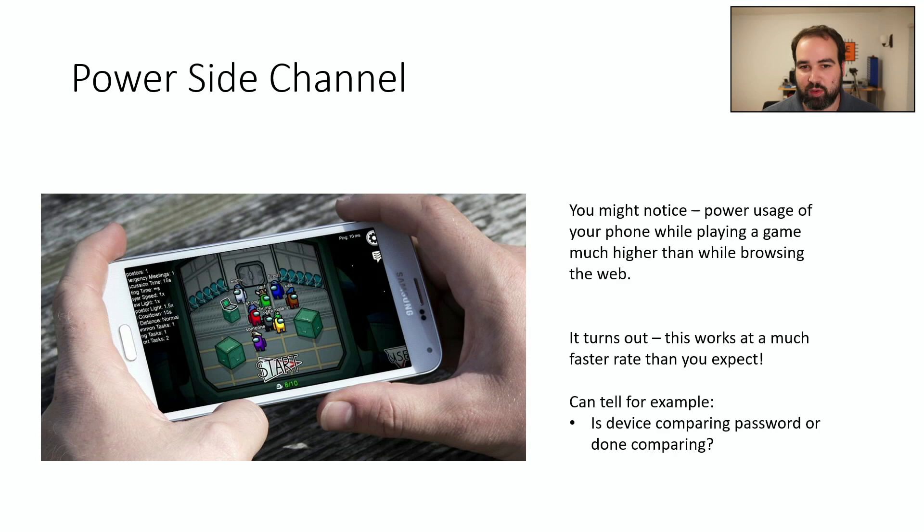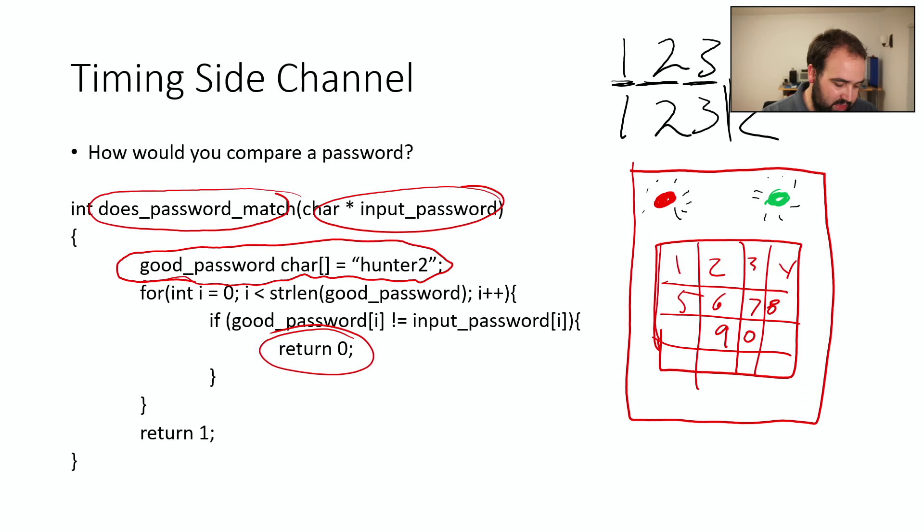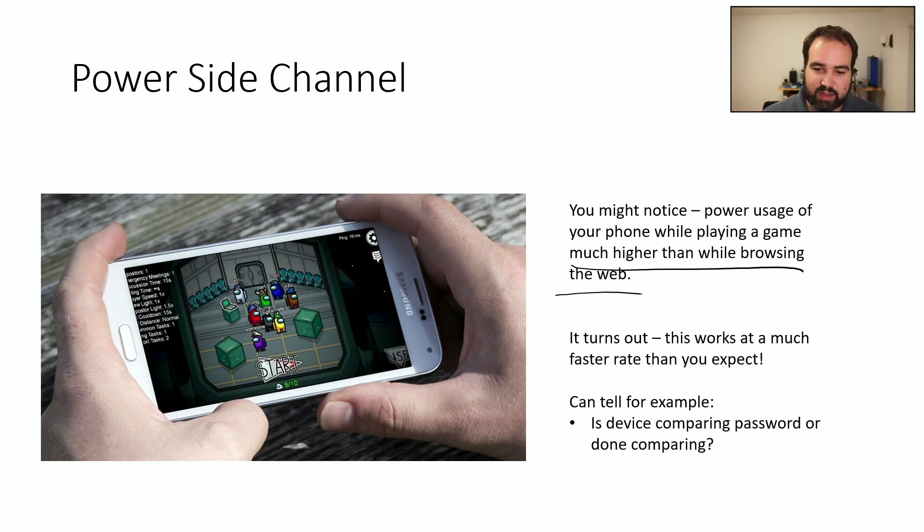A really nice one, and we're going to talk more about this, is power side channel. So you probably noticed that if you do stuff on your phone, like if you're playing games, there's a much higher usage than when you're browsing the web. So you can actually do this in a really fine grain level. So you can actually tell within this code, as it's executing different sections of the code. We can actually see that in the power side channel. So we're going to look into a little more detail in the next lecture about how that actually works.